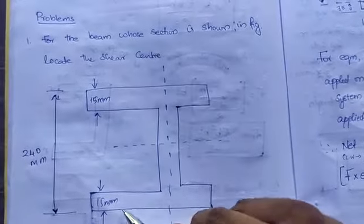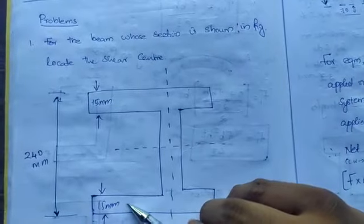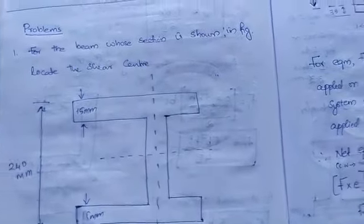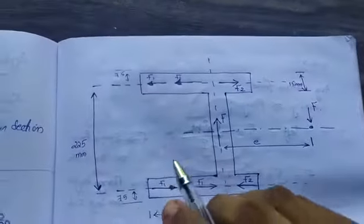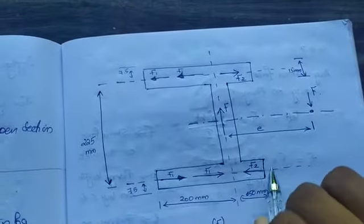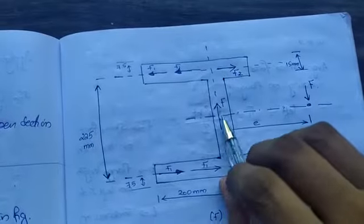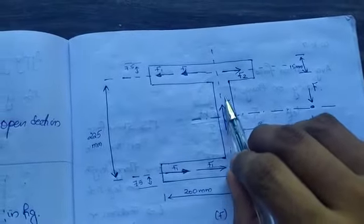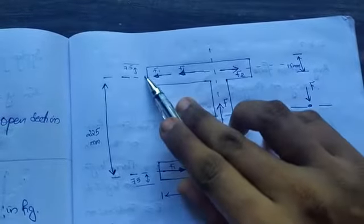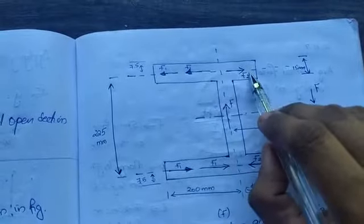First of all, you need to find out how the shear force flows. The shear flow will be like this - there will be a force F1 coming like this and F2 from this end. This will move together and produces a force F. Again this will flow from the same flange in this direction as F1 and this direction as F2.